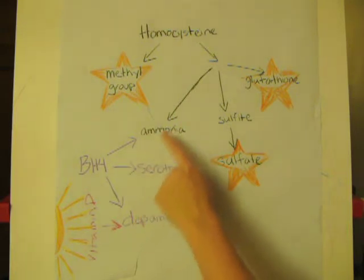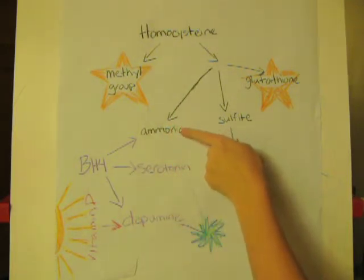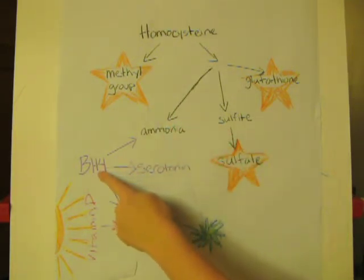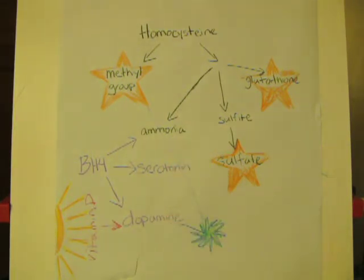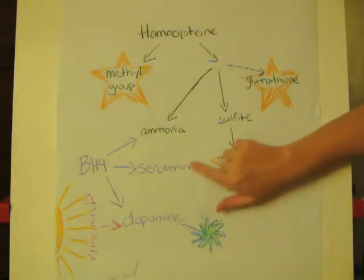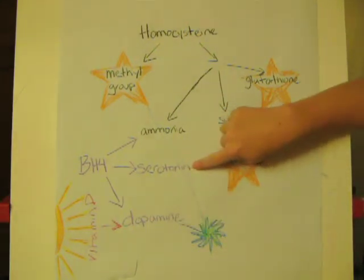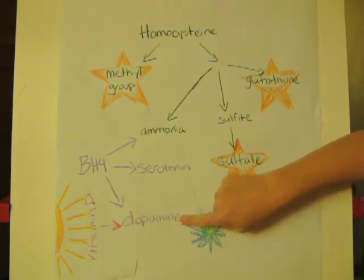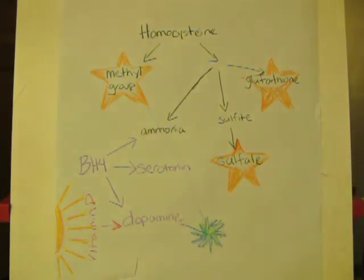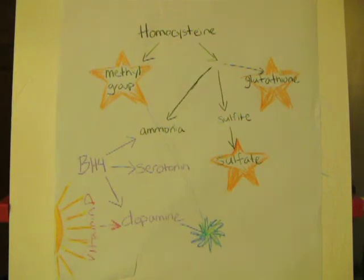So if you are generating a whole lot of ammonia, you're not going to have as much BH4 left over to make these two neurotransmitters. And these are both important — low serotonin is associated with depression, and low dopamine is associated with ADD. You can also get issues from having too high dopamine; many factors affect your dopamine levels, and you can have levels that are too high or too low.